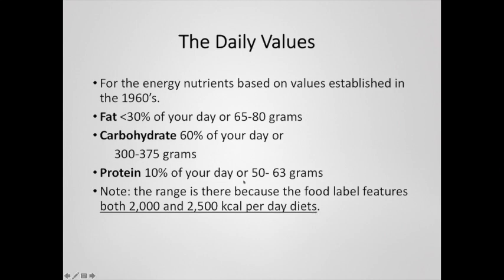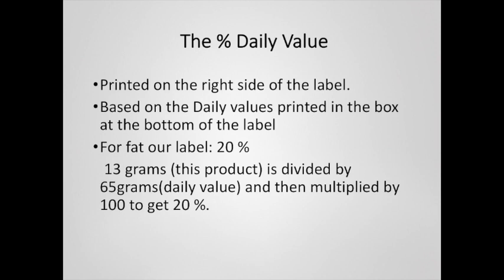Many people think they need a lot more protein than they actually do. At 10% of your calories per day, it ends up being 50 to 60 grams of protein — quite easy to get if you eat even half as much meat as most Americans. The percent daily values are printed on the right-hand side of the nutrition facts label. The fat content of the label we've been using is 20% — there's 13 grams of fat and you need 65, so 13 divided by 65 times 100 equals 20%.